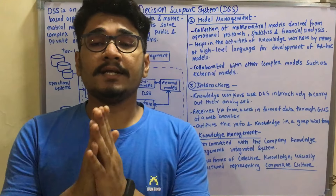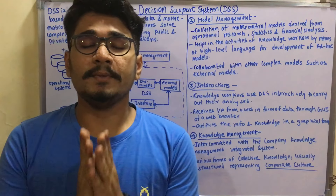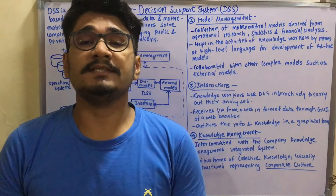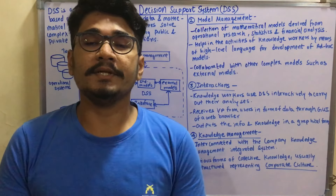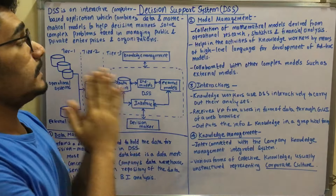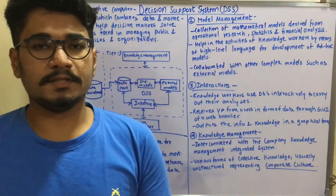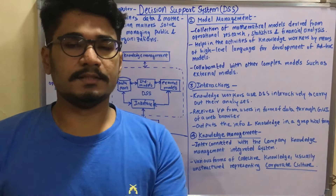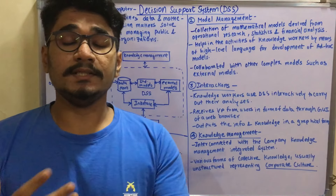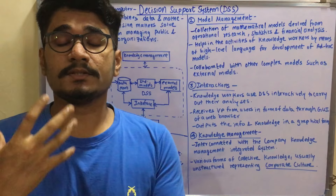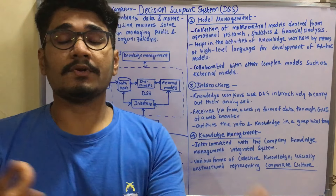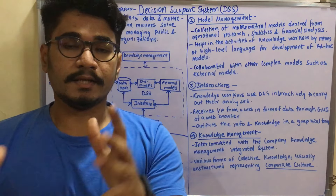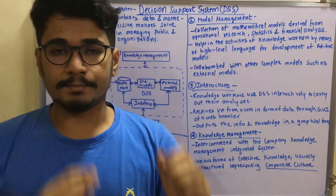Hey guys, welcome back to yet another interesting video based on business intelligence. In today's video we'll be seeing what is a Decision Support System in BI — it's a system used for complex decision making processes in different organizations and enterprises. Let's start with the basic definition of what DSS actually is.